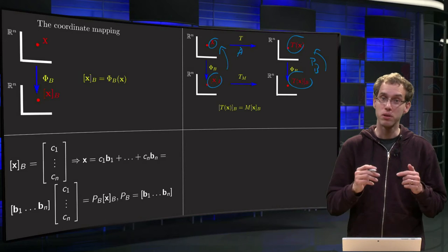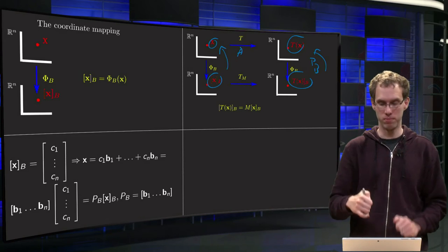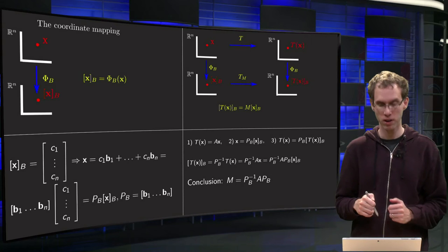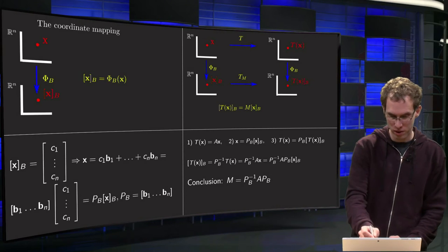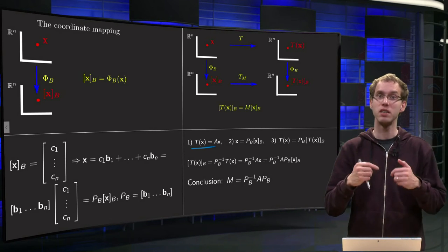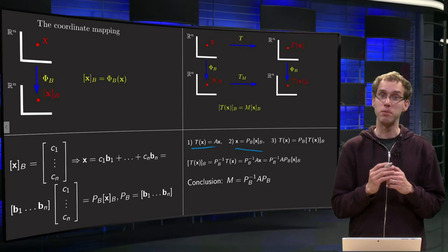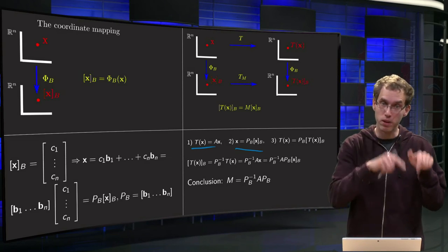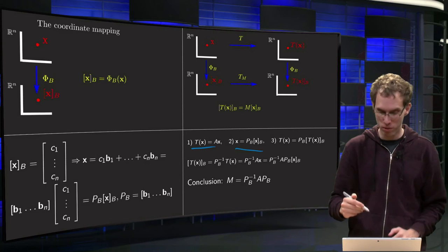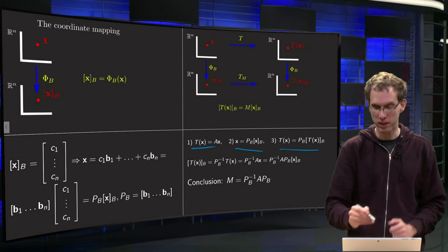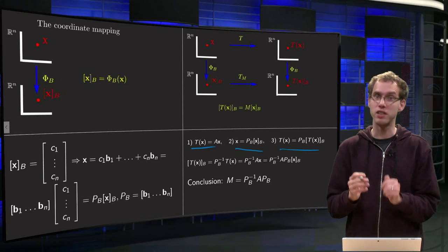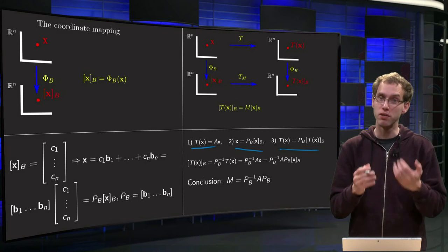How are we going from left to right if we are down? Well that works as follows. We know that first of all T of x equals A times x. And x equals Pb times xb. And T of x similarly on the right hand side equals Pb times T of x in the basis b.